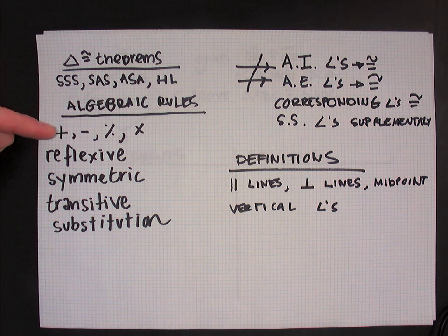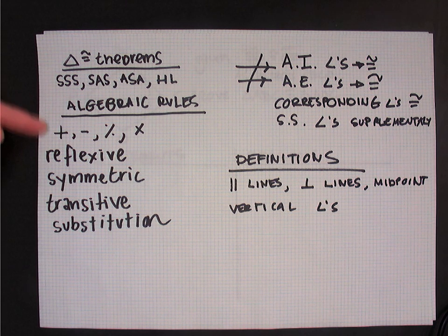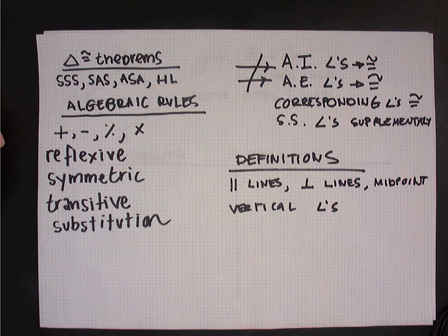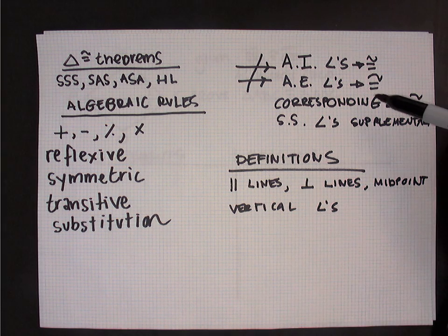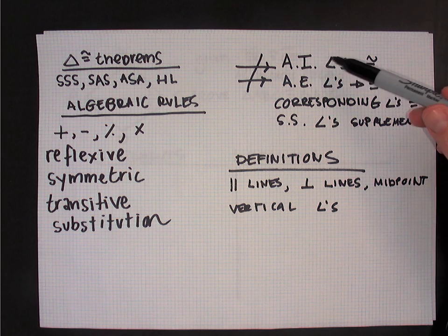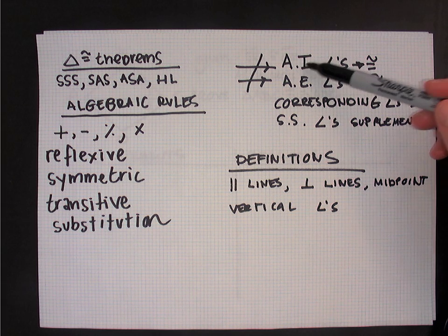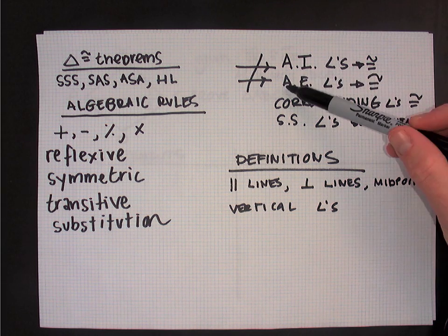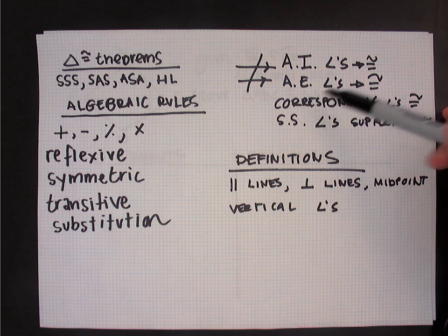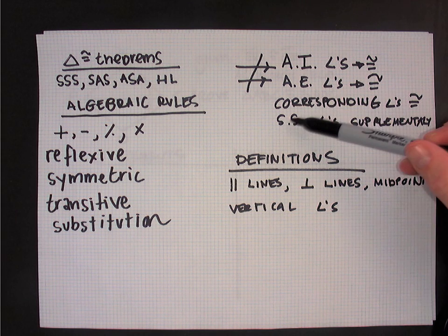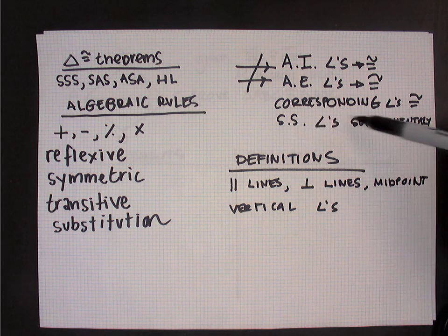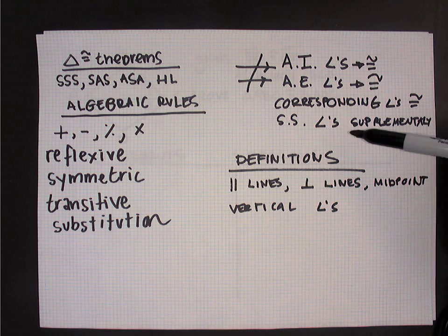Underneath that, I have the algebraic rules we studied earlier in the year — you can see them all listed here. We won't go into each in detail, but that's a nice list to look back on. I also have a series of angle relationships from when we looked at parallel lines cut by transversals: alternate interior angles, which are congruent; alternate exterior angles, also congruent; corresponding angles, which are congruent; and same-side interior angles, which are supplementary. The same applies to same-side exterior angles — also supplementary.